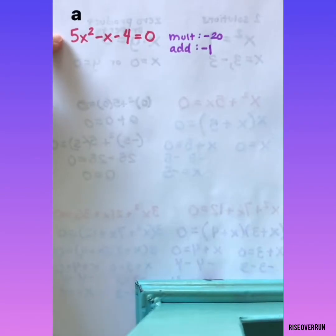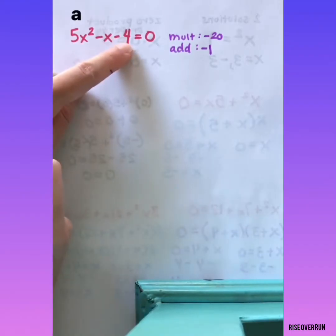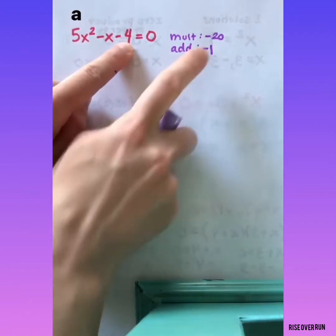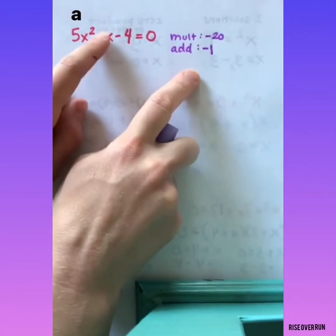Let's try to solve this one. This time, a equals 5. I can't factor a 5 out of all the terms. So I'm looking for two numbers that multiply to give me negative 20 and add to give me negative 1.